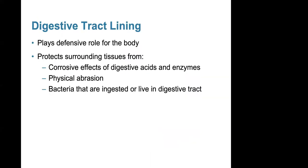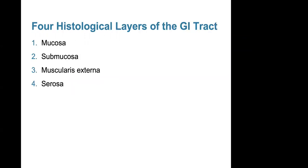The digestive tract lining plays a defensive role for the body. It protects surrounding tissues from the corrosive effects of digestive acids and enzymes, as well as physical abrasion and bacteria that are ingested or live within the digestive tract. There are four histological layers of the GI tract: the mucosa, the submucosa, the muscularis externa, and the serosa. The mucosa is the innermost layer and the serosa is the outermost layer.